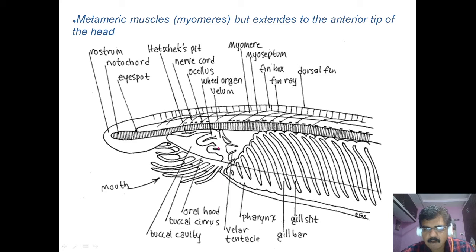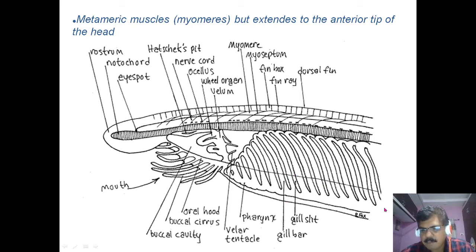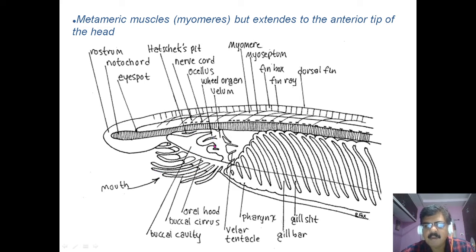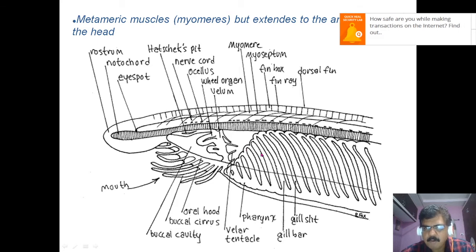The buccal cavity leads to the wheel organ, and then there is the vellum, which is the mouth. At the vellum they have tentacles called velar tentacles. The water along with food goes towards the pharynx region, and whatever water goes to the pharynx bathes the gills. Through the gill slits the water goes to the atrial chamber and then exits outside through the atriopore.